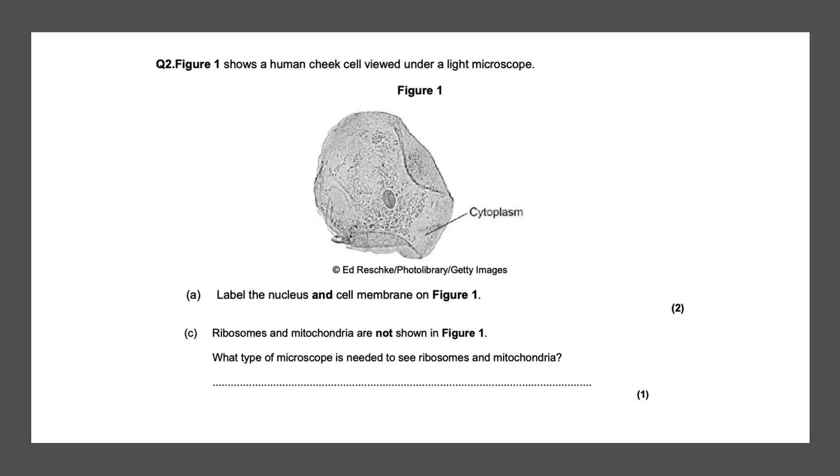Next question. Figure 1 shows a human cheek cell viewed under a light microscope. Label the nucleus and cell membrane on figure 1. This should be simple. Over here you can see the nucleus. You would just label this the nucleus.